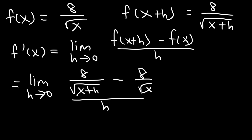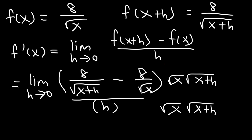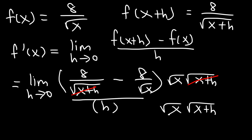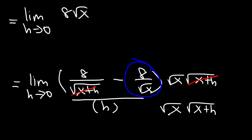We have two problems combined into one — the 1 over x problem with the square root of x problem. What I recommend is eliminating the fractions within the larger fractions by multiplying by the common denominator: the square root of x times the square root of x plus h. These terms will cancel, leaving behind 8 times the square root of x. And when I multiply the second fraction by that term, the square root of x will cancel, leaving negative 8 square root of x plus h.